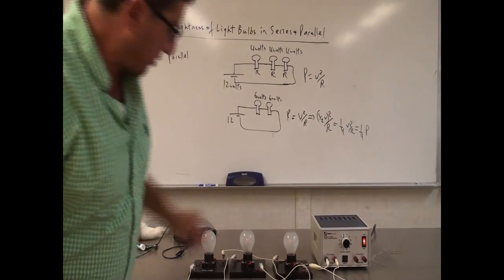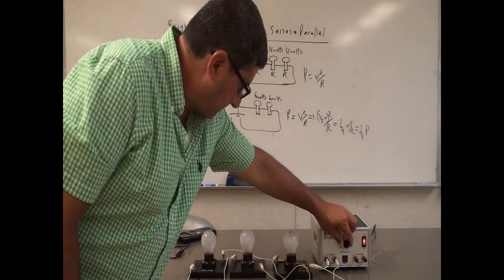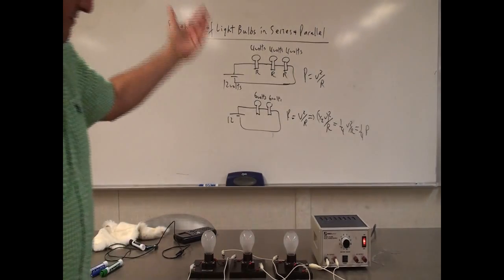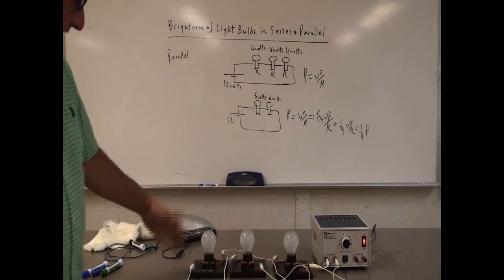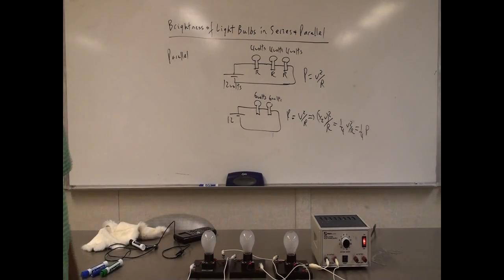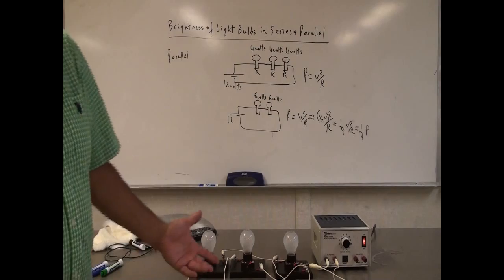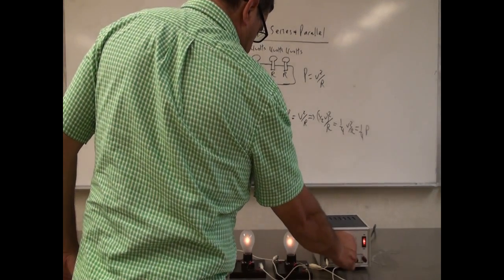If I go to six volts — very, very dim. Five volts — you can't even see it. So if I had a fourth one, definitely you can't see anything even at six or seven volts. So let's go back up to 12 volts.